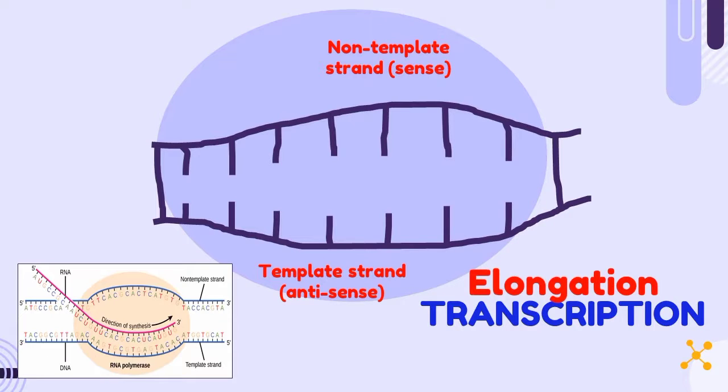Now, during elongation, RNA polymerase doesn't need a primer. It simply initiates mRNA synthesis at start codon and then moves downstream along the gene, synthesizing the mRNA as it goes.